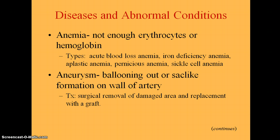Unless you can reverse aplastic anemia, you will probably die from it, so it is quite serious. Pernicious anemia is caused by a lack of intrinsic factor, which helps you absorb B12. You need vitamin B12 and folic acid in order to develop mature erythrocytes, so what happens is you have inadequate or abnormally large erythrocytes.